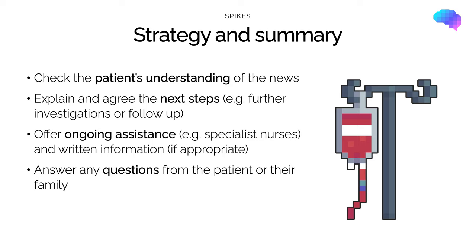The last stage in SPIKES is strategy and summary. You should check the patient's understanding of the situation and involve the patient in agreeing the next steps, such as further investigations or starting treatment. Agree an appropriate follow-up plan and ensure the patient knows what will happen next. You should offer ongoing assistance, for example from a specialist nurse, and provide written information if appropriate. Finally, answer any questions from the patient and their family before bringing the consultation to a close.